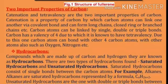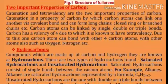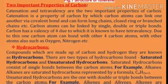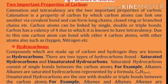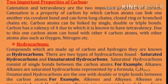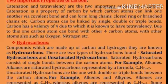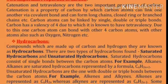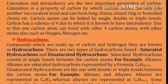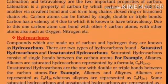Hydrocarbons: Compounds which are made up of carbon and hydrogen are known as hydrocarbons. There are two types of hydrocarbons: saturated hydrocarbons and unsaturated hydrocarbons. Saturated hydrocarbons consist of single bonds between carbon atoms. For example, alkanes are saturated hydrocarbons represented by the formula CₙH₂ₙ₊₂.